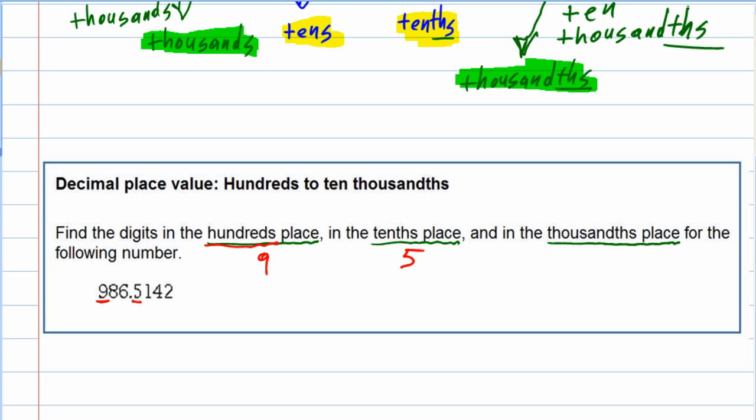And then the thousandths—well, if we remember the pattern on the right-hand side, it's tenths, hundredths, thousandths. So the four is in the thousandths place.